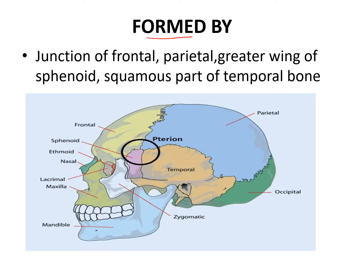Now, how is it formed? The Pterion is formed at the junction of the following bones: the frontal bone, the parietal bone, the greater wing of sphenoid, and the squamous part of the temporal bone. At the meeting point of these four bones, you will have the Pterion.